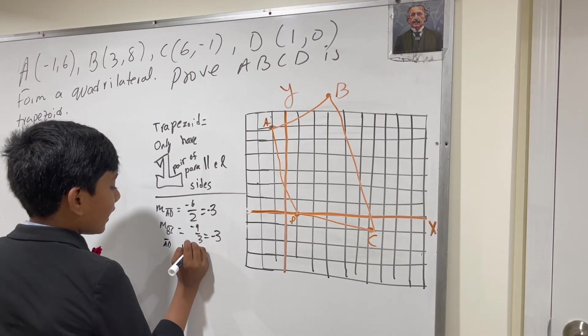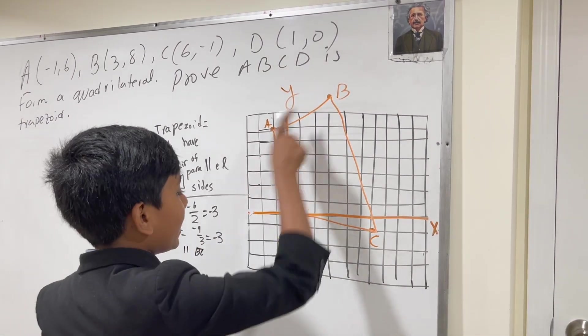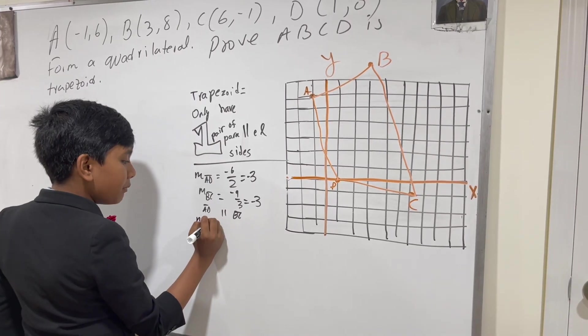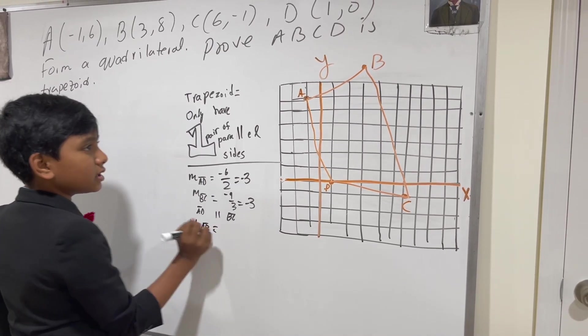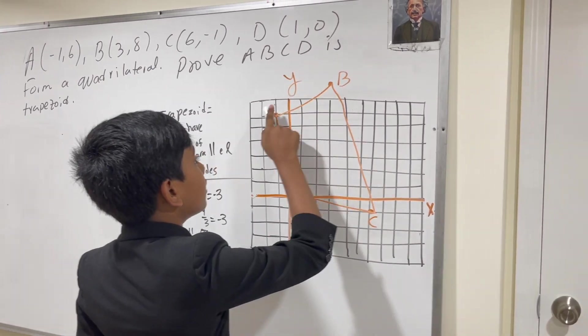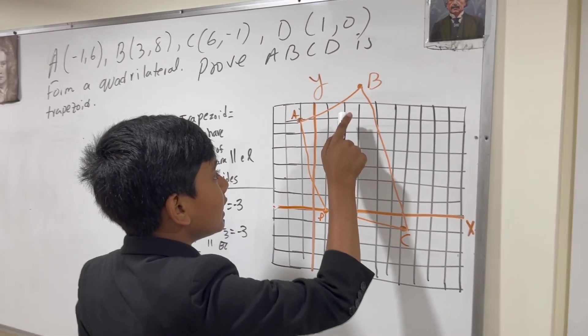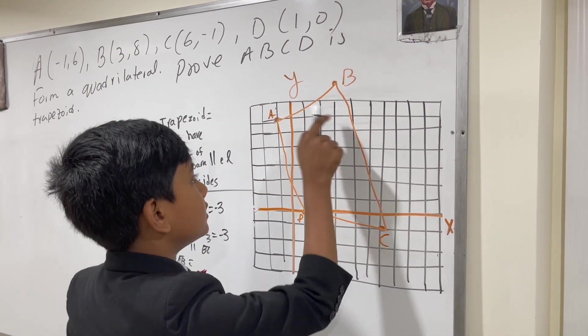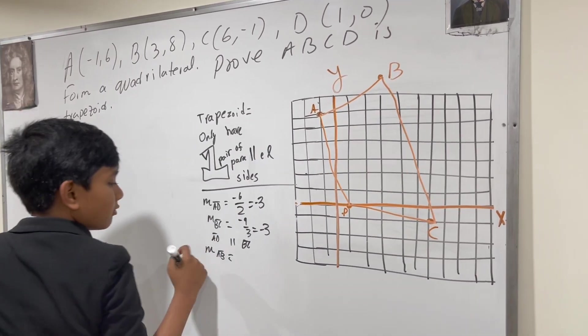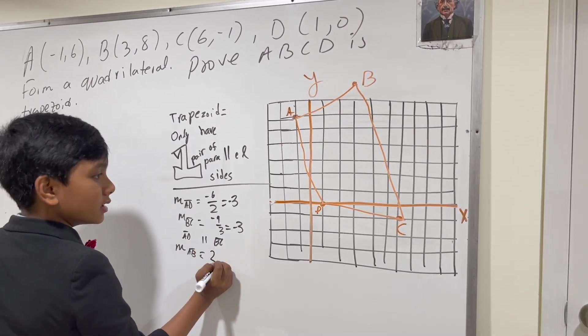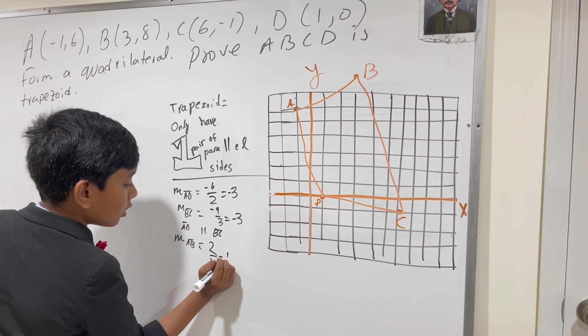But now we have to prove that AB and DC are not parallel. And AB, so what is the slope of AB? Well, you've got, what is our rise? It's going to be 2, and our run is 4. Wow! Positive for once. I haven't seen that. So our rise is 2, run is 4, one half.